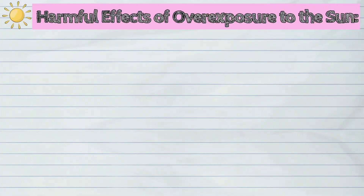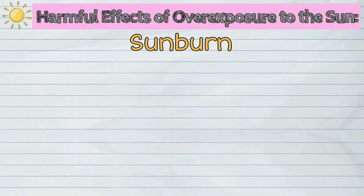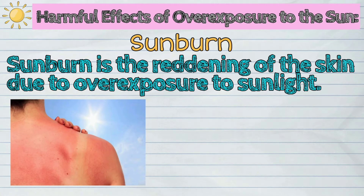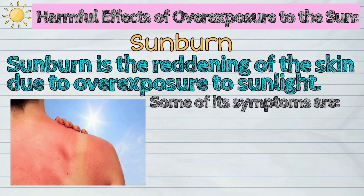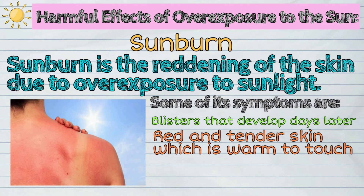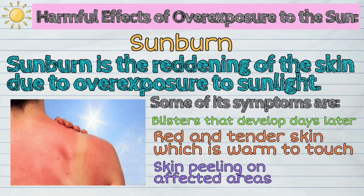The following are the harmful effects of overexposure to the sun. First, sunburn. Sunburn is the reddening of the skin due to overexposure to sunlight. Some of its symptoms are blisters that develop days later, red and tender skin which is warm to touch, and skin peeling on affected areas.